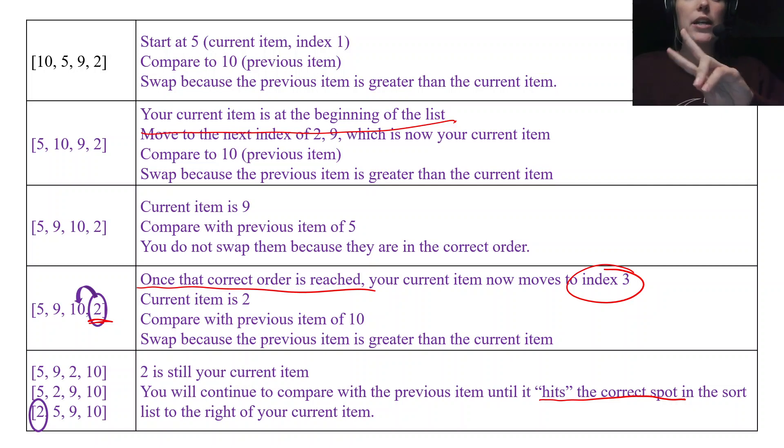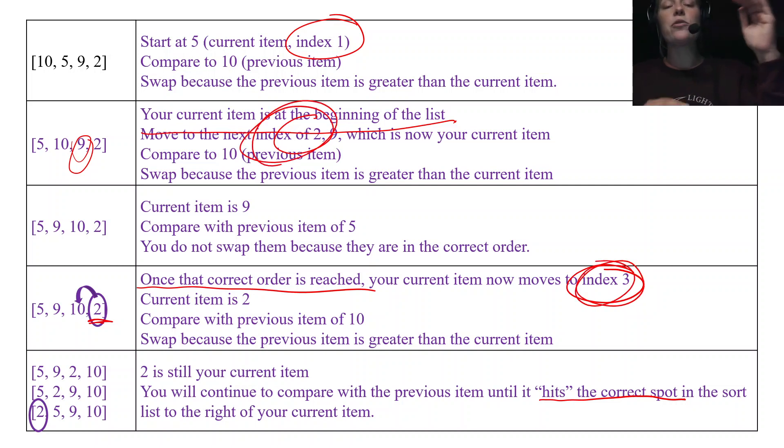So again, you're going to see with this code, a nested loop. We have a loop, the outer loop controls the index. So we got index 1, when we went to index 2 with the 9, index 2 right here. And then when we went to index 3, that outer loop is going to control those indexes. Your inner loop is going to control your insertion until it hits the correct spot. You keep going until it hits the correct location of that ordered list.